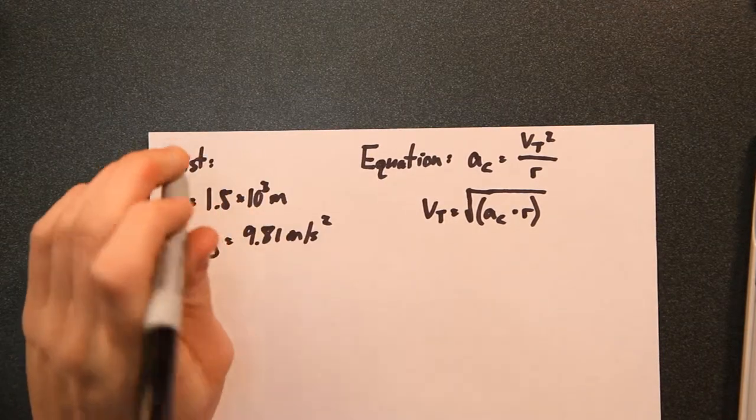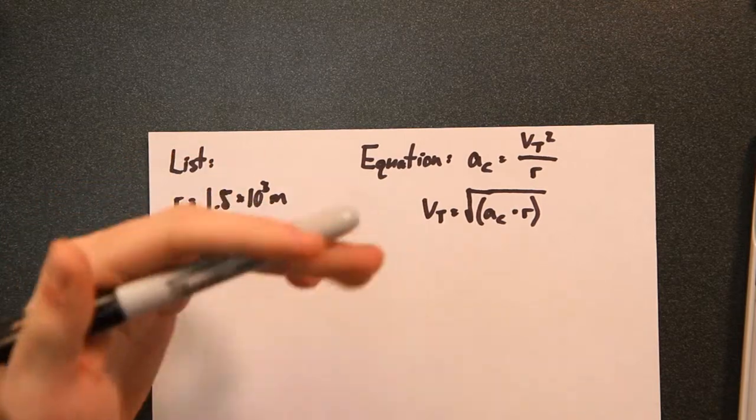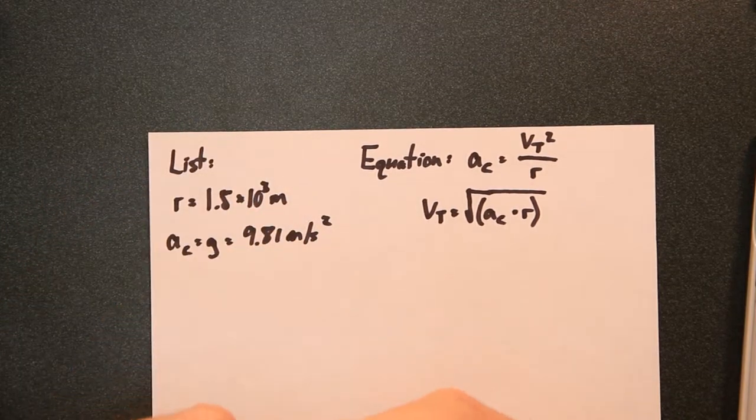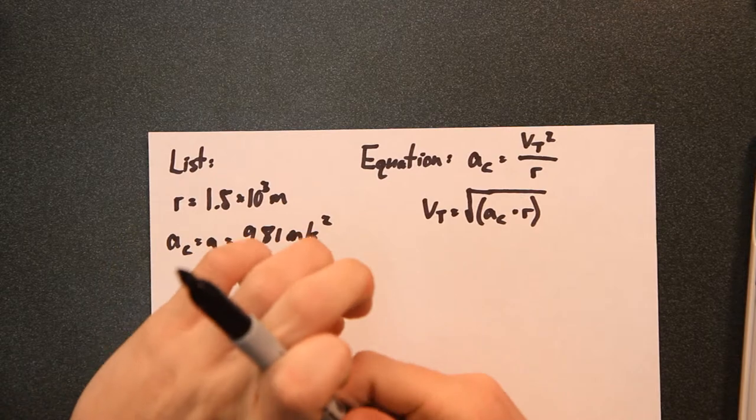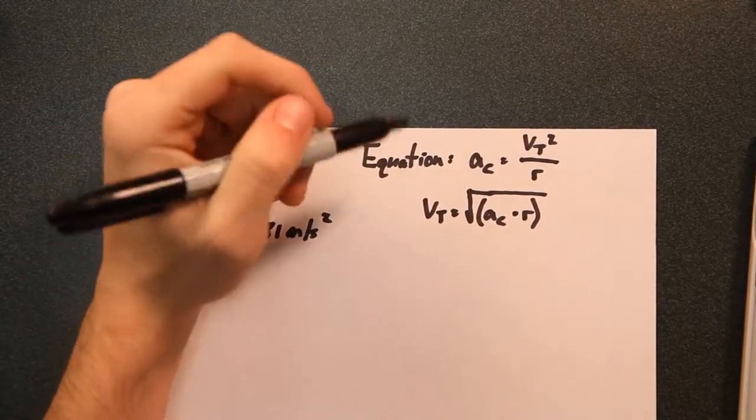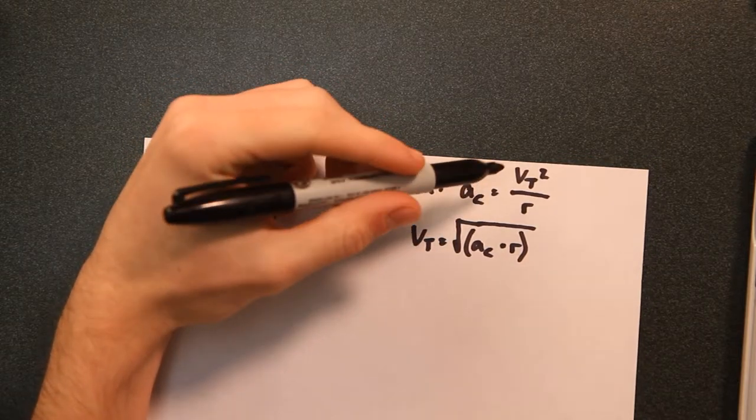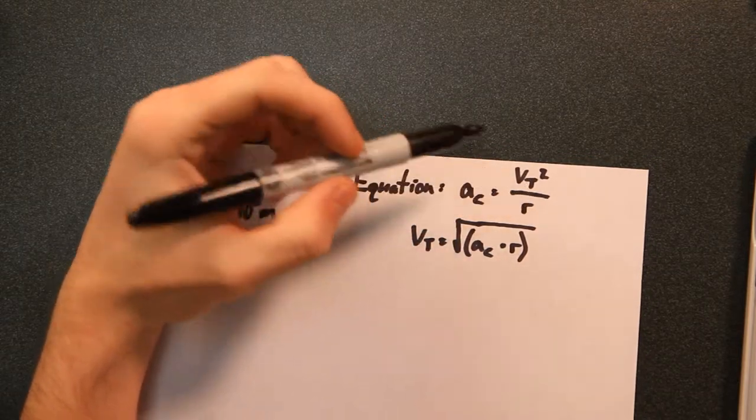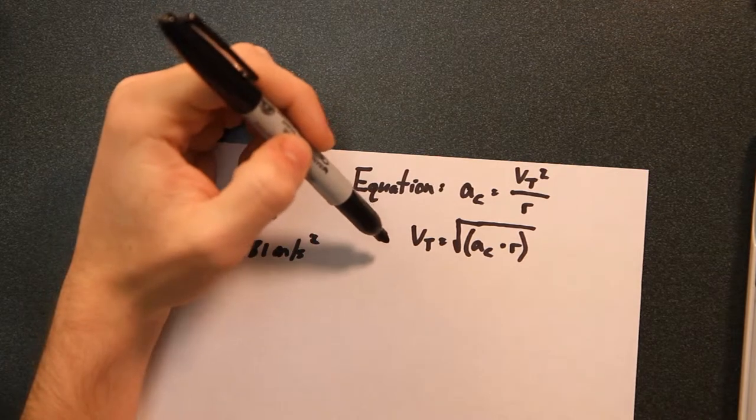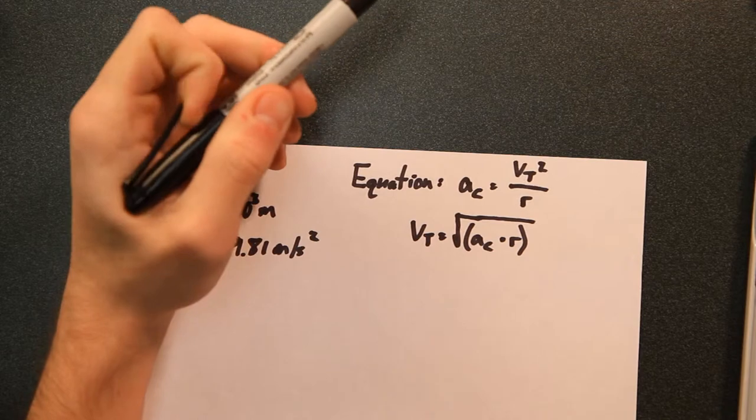So we're going to use the base equation, a sub c equals v sub t squared over r, and rearrange that to v sub t equals the square root of a sub c times r.